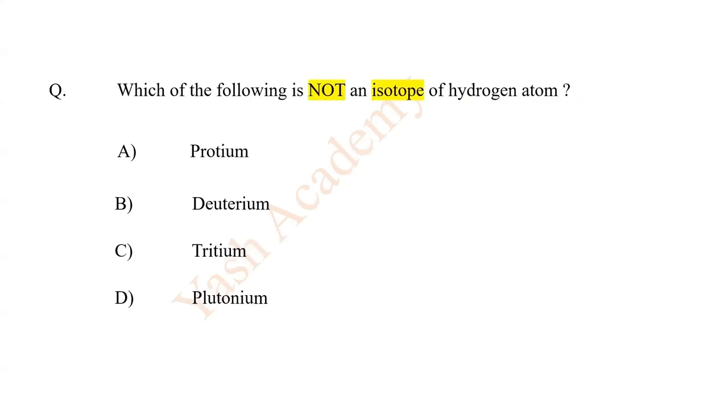Which of the following is not an isotope of the hydrogen atom? The answer is D: plutonium.